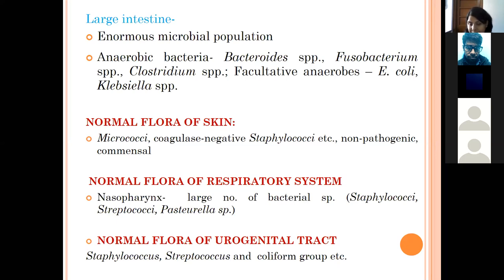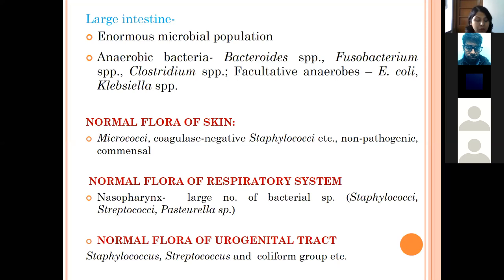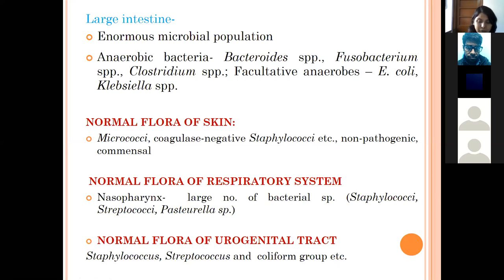Coagulase-negative Staphylococcus are reported to cause mastitis in bovines and diseases in humans as well. In the respiratory tract, the sinuses and lower respiratory tract are normally free of bacterial flora, but the nasopharynx is highly populated by Staphylococcus, Streptococcus, and bacteria of the Pasteurella family. In the urogenital tract, bacteria such as Staphylococcus, Streptococcus, and E. coli are present, and some infections are caused by these bacteria.